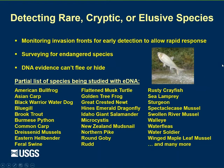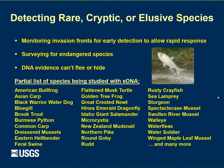Along the lines of detecting rare, cryptic, or elusive species — one of the things started early on was detecting invasives and monitoring invasion fronts for early detection to allow rapid response. Not all species are easily captured with nets or other methods, but everybody has DNA, and that DNA can't hide from you, it can't run from you — if it's there, you can find it. It's also being used to survey for endangered species, with pretty much all taxa represented in current eDNA studies.